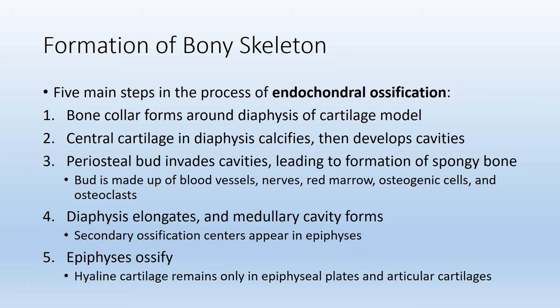Next, the diaphysis or shaft begins to lengthen and the medullary cavity forms — present only in long bones, this is where yellow bone marrow is found. While this is happening, secondary ossification centers appear in the bone ends, at the proximal and distal epiphyses. Eventually the epiphyses ossify, and the only places where hyaline cartilage remains are the growth plate and the articular cartilage covering the ends of the bone.